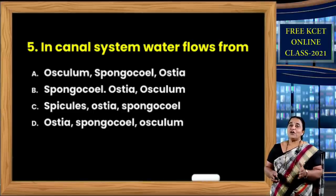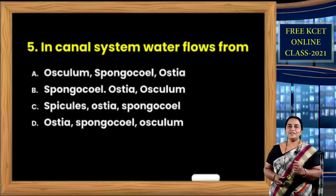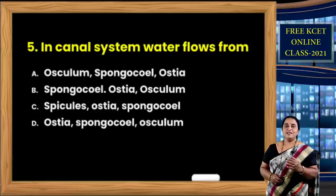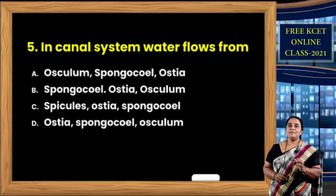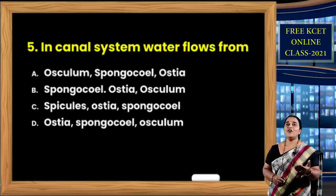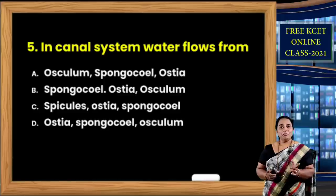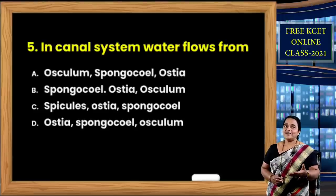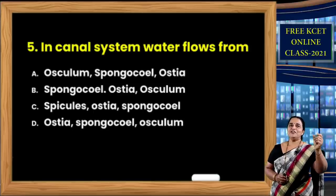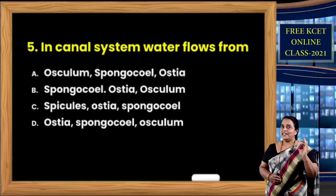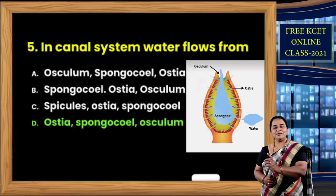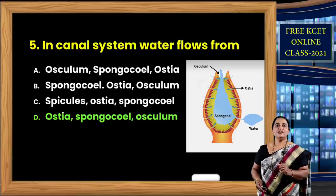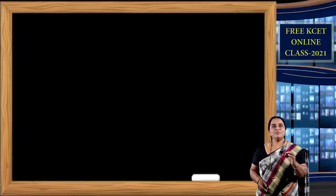Question number 5: In the canal system — recall that the first phylum among non-chordata is Porifera, which includes sponges — sedentary, cellular grade, asymmetrical animals. The body surface has minute openings called ostia where water enters. Water accumulates in the cavity called spongocoel, whose inner lining is made up of choanocytes (collar cells). They take food particles from the water, release waste, absorb oxygen, and release carbon dioxide. Water then exits through the osculum. So the correct option is ostia, spongocoel, and osculum — option D.